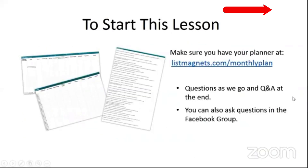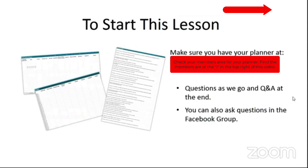To start this session, you should have your monthly planner — it's a spreadsheet that we're going to work through. I'm going to show you an example of my actual plan for my Elite Writer's Lab, where we work with writers and teach them how to make a living from their writing. You'll see how I've done it and give you some ideas on how you might apply this, because this is how I plan every month. This is a protected file for customers only — it's at listmagnets.com/monthlyplan.